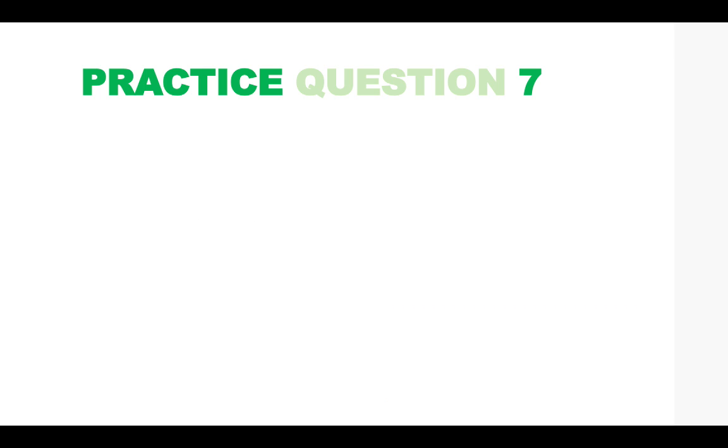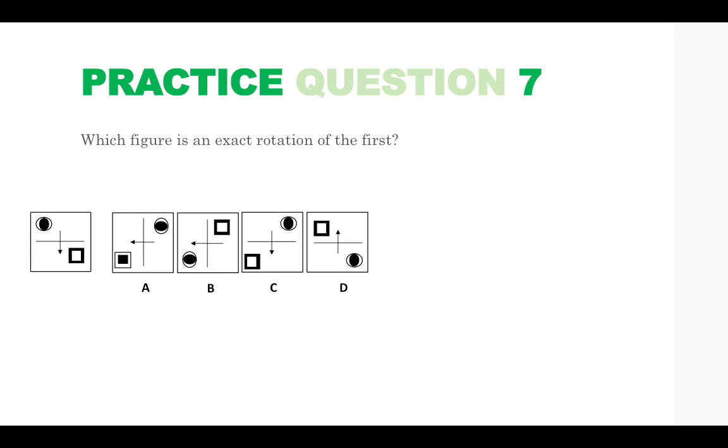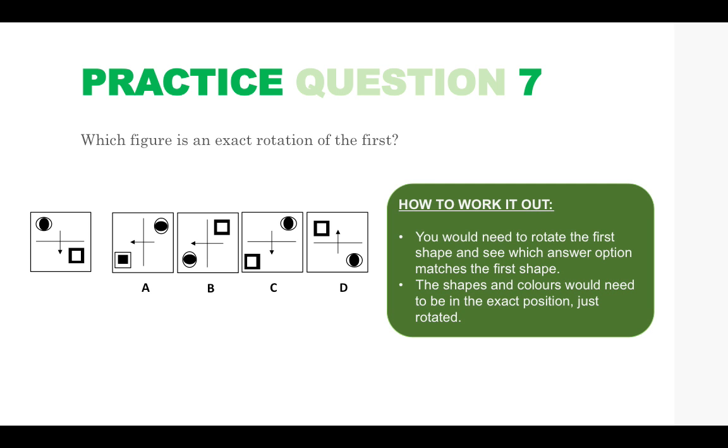Practice question 7. Which figure is an exact rotation of the first? So here we have the first shape and you have to determine which of the answers is an exact rotation. So nothing can be manipulated or reflected in the shapes. And again, the best way to practice these types of questions is to draw it out and then just turn the paper and see how it would look in different positions.